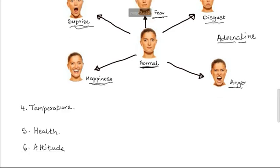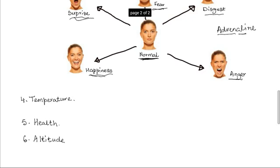Finally, altitude is another factor. At high altitude, the rate of breathing is faster than at low altitude. This is because the higher the altitude, the lower the concentration of oxygen. Thus, there is a need for a faster rate of breathing to supply tissues with sufficient oxygen for respiration.